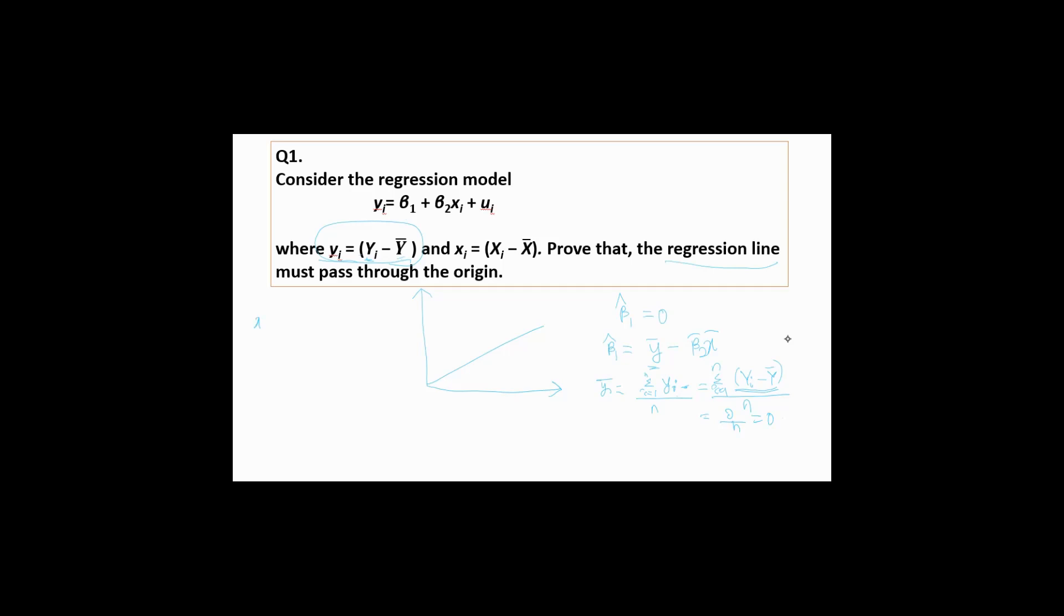Similarly for x̄i, we will be taking this value. So this xi minus x̄ bar - where are we going to use it? We are using these values to find out the x̄ bar. So the step will be the same: summation of xi from 1 to n, divided by n.